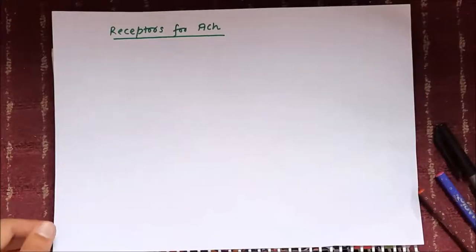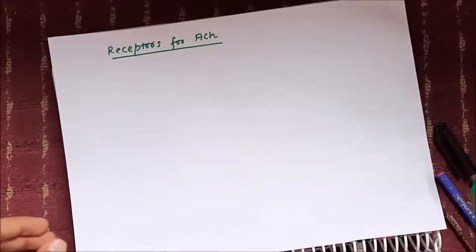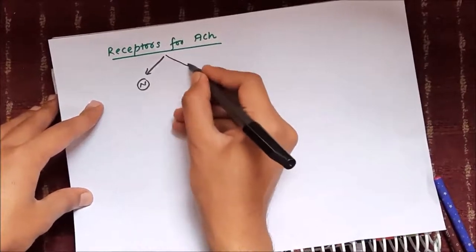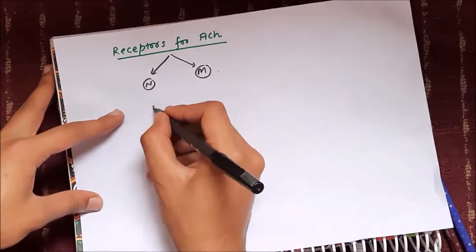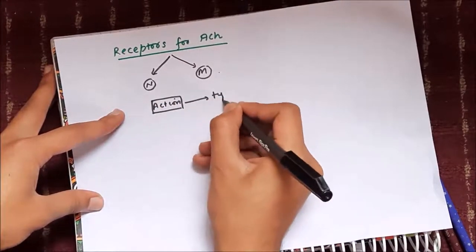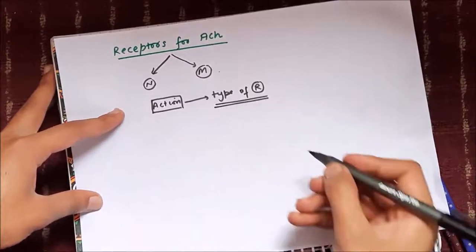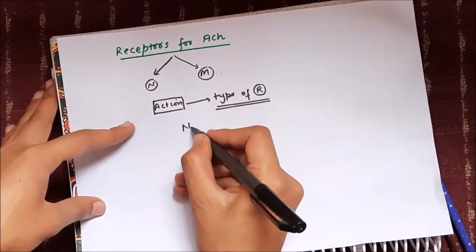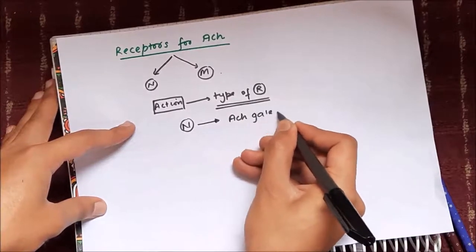In this section we'll discuss the receptors for acetylcholine. There are two main types of receptors stimulated by acetylcholine: nicotinic and muscarinic receptors. In order to understand the action of these receptors, we must know exactly what type of receptors nicotinic and muscarinic receptors are.